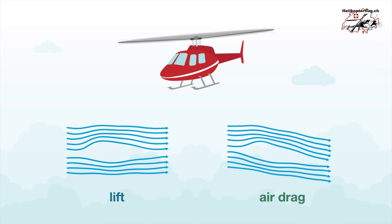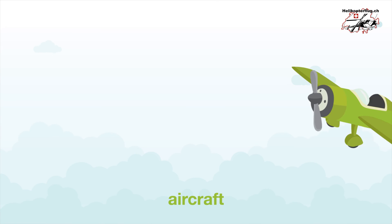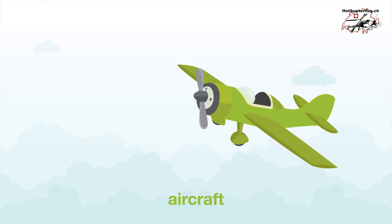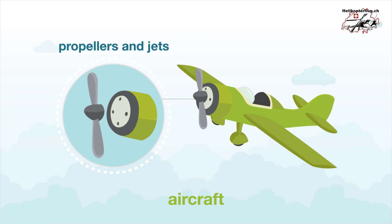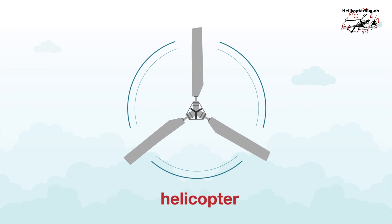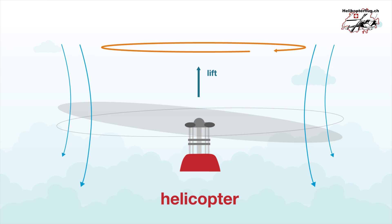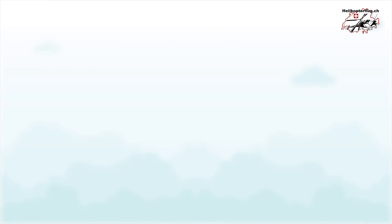In a helicopter, the greater the angle of attack of the rotor blades, the more operating power that is required. In an aircraft, propulsion is provided by either a propeller or a jet engine. In the case of a helicopter, the rotor is powered by piston engines or turbines. The rotor blades constantly spinning at the same speed create lift and accelerate the air from above to below.